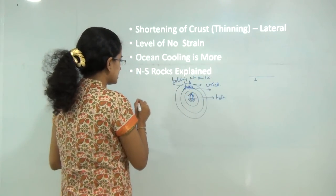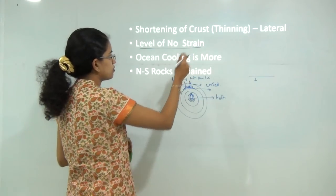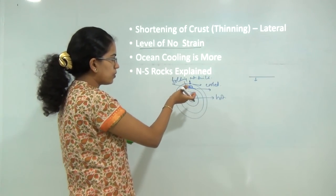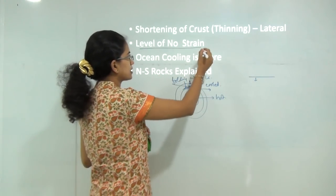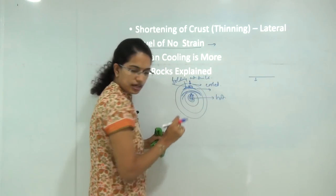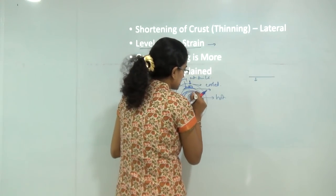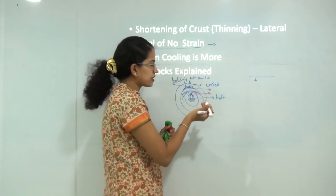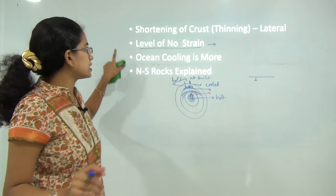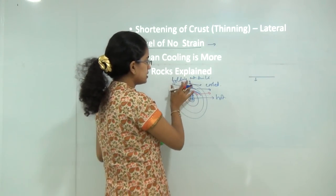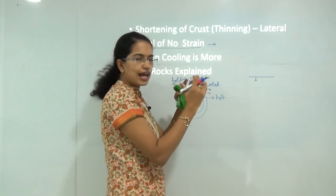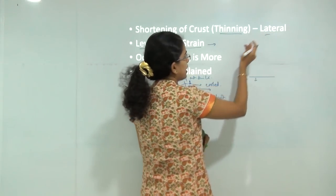Jeffreys also tried to explain an interesting concept known as the level of no strain. The level of no strain is an area that is well supported from below and can also freely contract. It is a region lying between the inner area and the outermost area - it cannot fall below, is well supported from below, and has the ability to contract. He said the outermost layer, which is cooled, gets contracted, and when it contracts it crumbles down, leading to thinning and lateral formations.